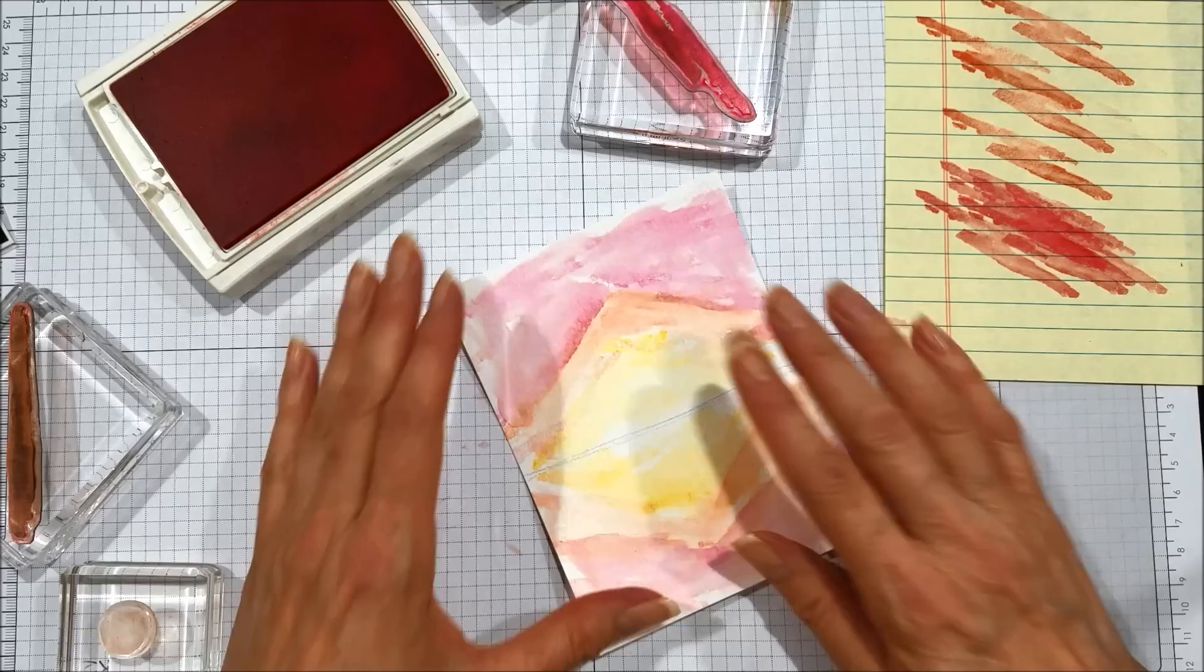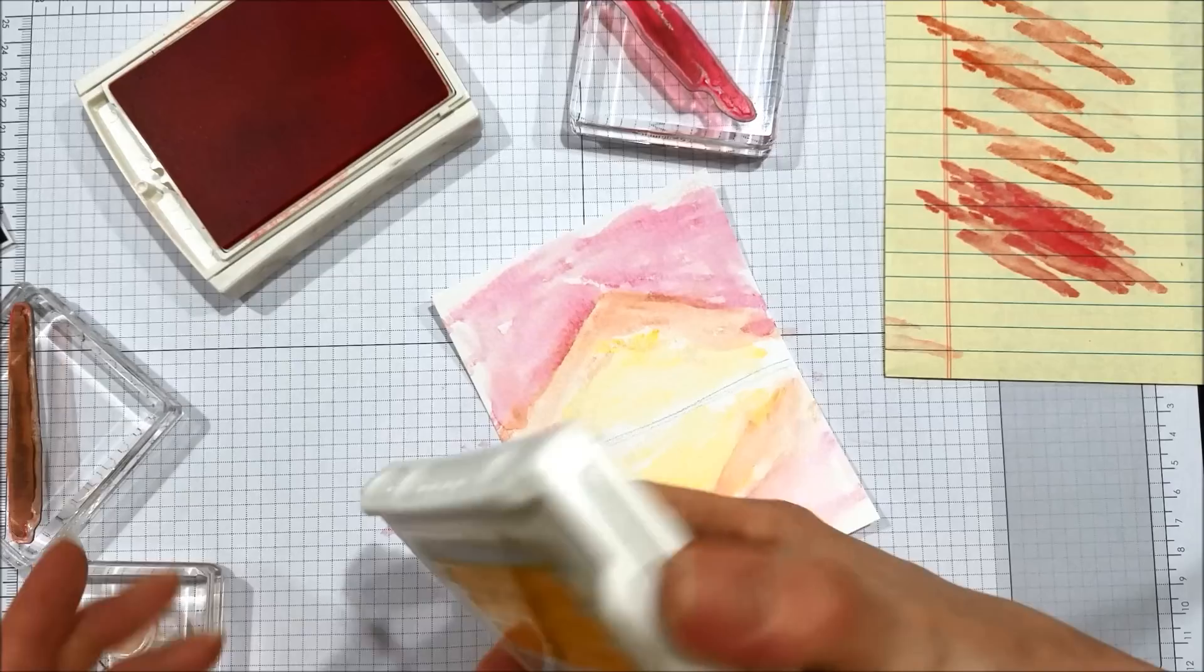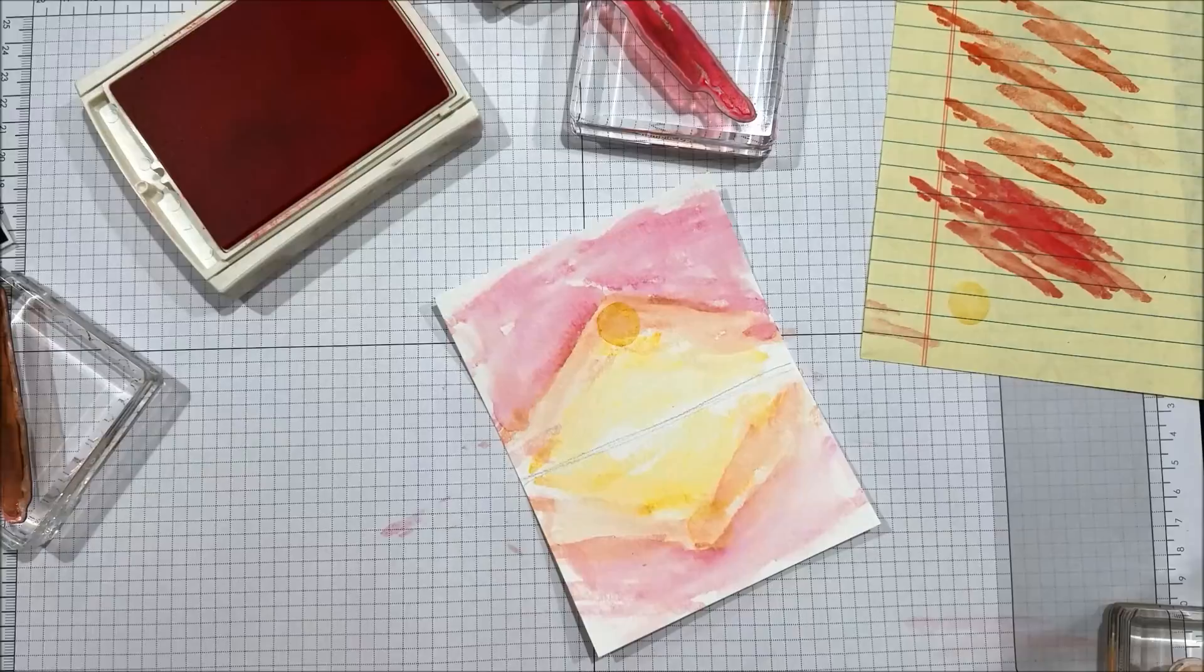At this point, decide which is going to be the top part of your card and which is going to be the bottom. I think I'm going to do this with the little darker shade up here. I'm going to take my Crushed Curry and get my sun in here. I'll stamp off for this one.